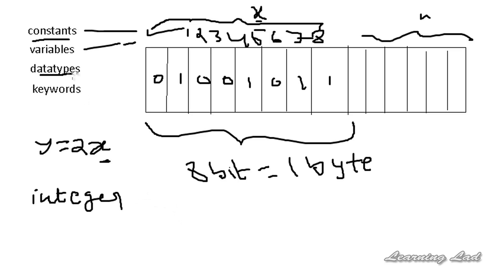So a data type is what type of data is stored in a variable or memory location. We have integer, floating point, character, and boolean — which is true or false — and void, which is a valueless data type. We also have type modifiers which are used with data types: signed, unsigned, short, and long.